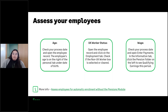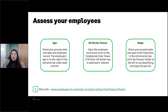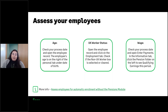To manually assess employees: for age, check your process date and open the employee record — the employee's age is on the right-hand side of the Personal tab underneath the date of birth. For UK worker status, still in the employee record but on the Employment tab, check whether the Non-UK Worker box is selected or cleared. For wage, check your process date and go to Enter Payments — on the Information tab you have a Pensions folder on the left where you can see what the qualifying earnings for that period are. Those are quick checks to assess your employees each period.